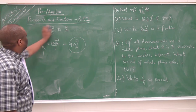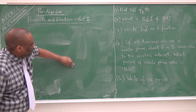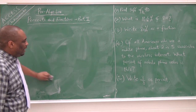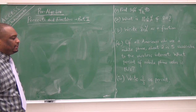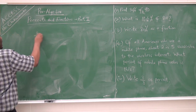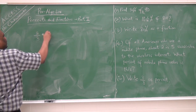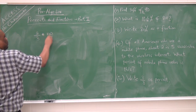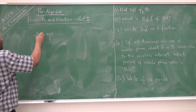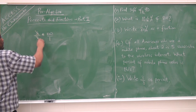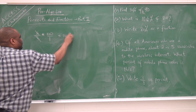The last one: Write 3 over 3 as a percent. So this is 3 out of 3 times 100 over 1. Since 3 divided by 3 is 1, this gives you 100%.